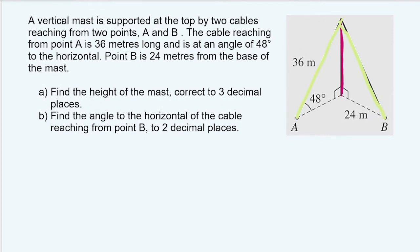So for A, find the height of the mast correct to three decimal places. Here's our mast. Here's our bit to the base. There's point A. There's our hypotenuse. Our hypotenuse being 36 meters and our angle being 48 degrees.